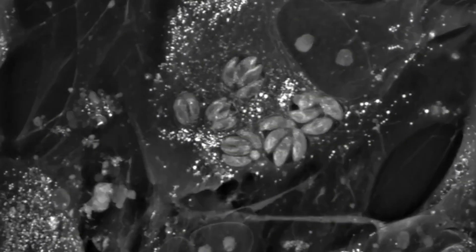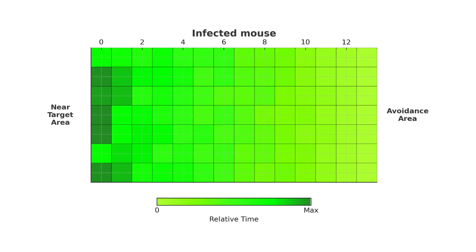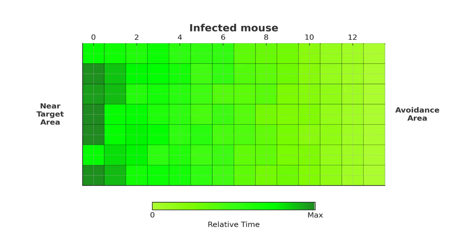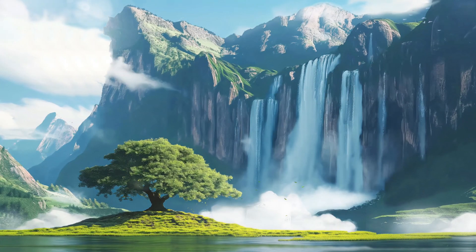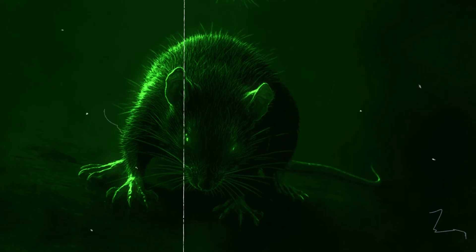This parasite can only grow and reproduce inside a cat. So when it infects a mouse, it changes the mouse's brain, making it walk straight toward the cat like it's delivering itself. This kind of behavior has been shaped over millions of years to push the host toward one clear goal.